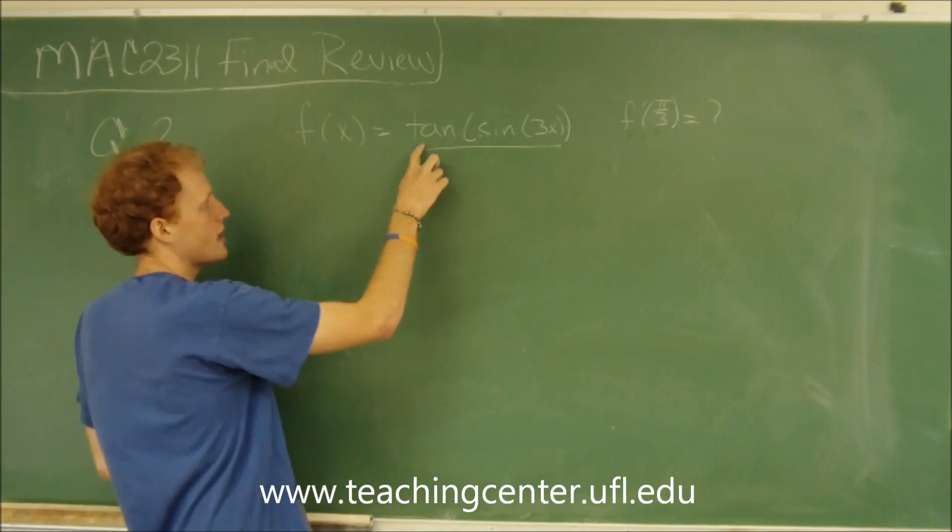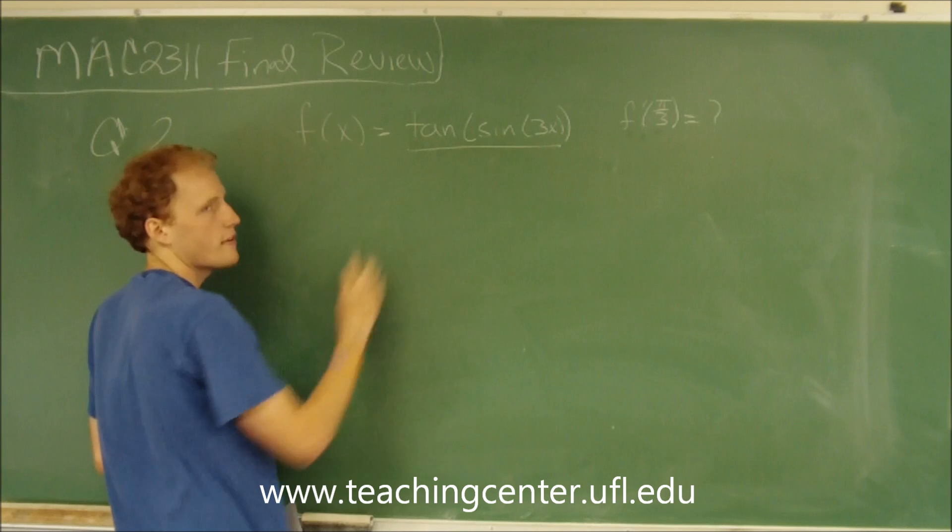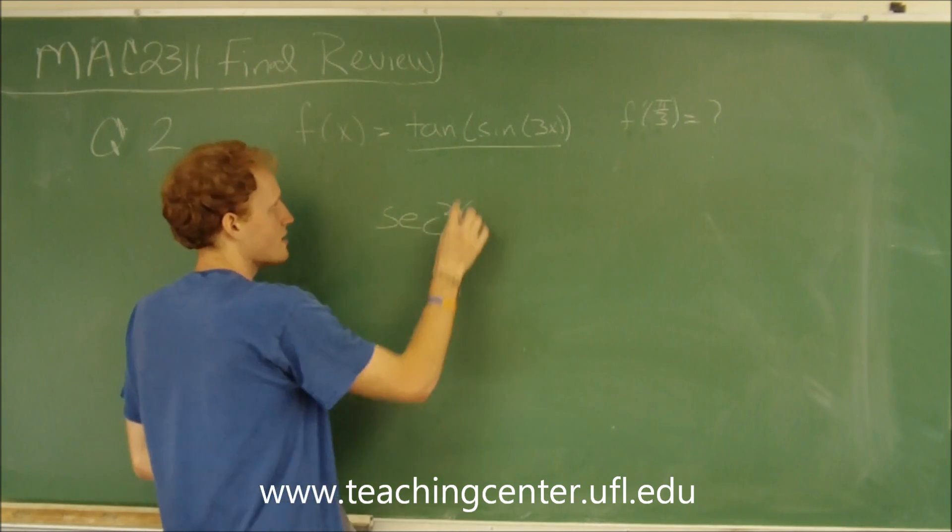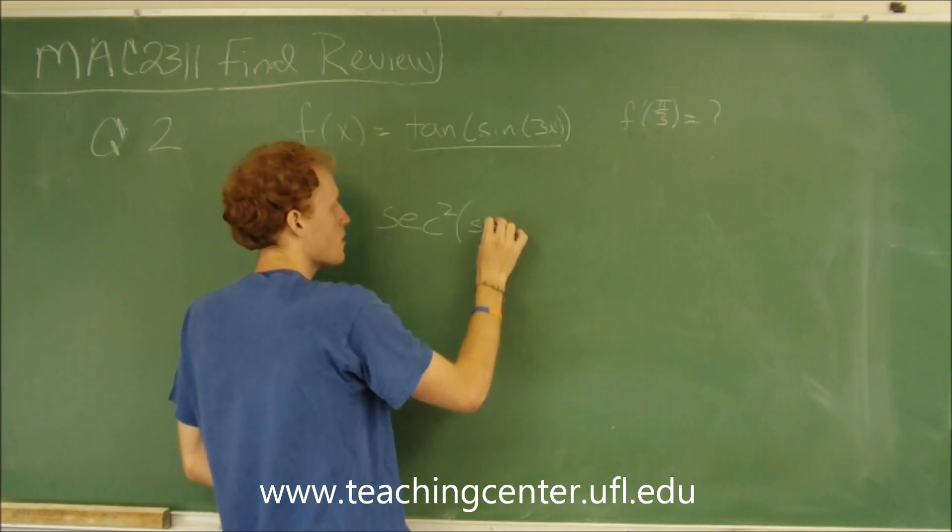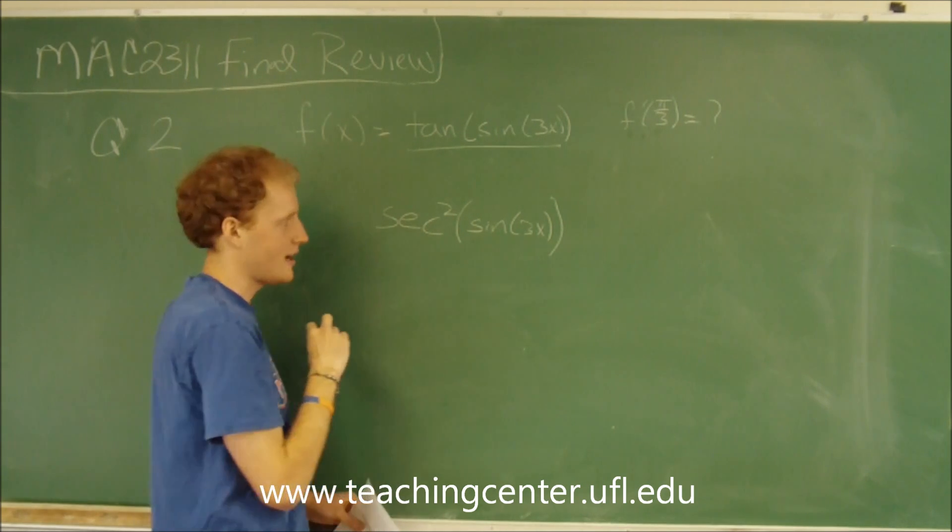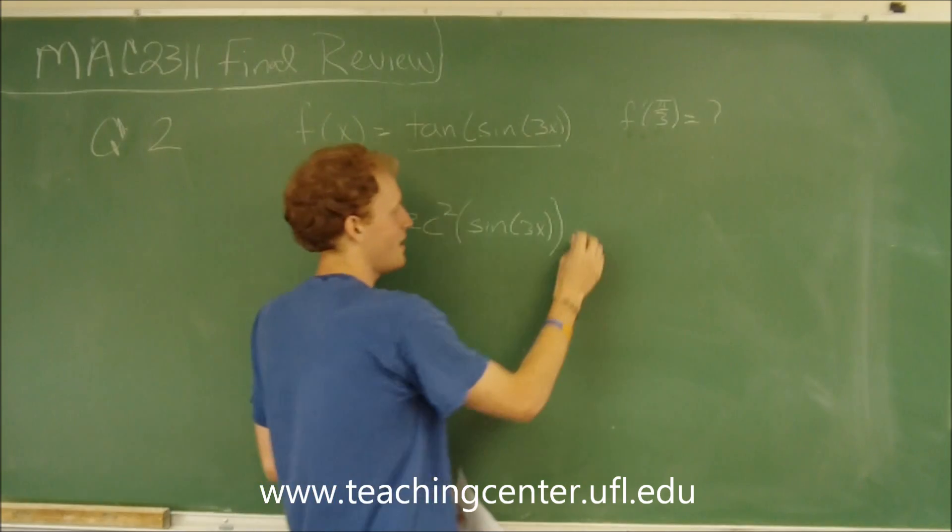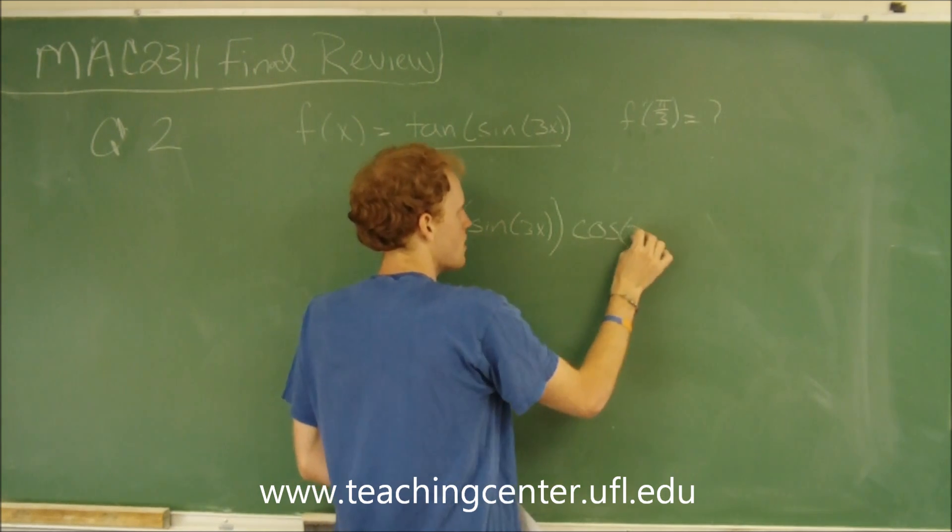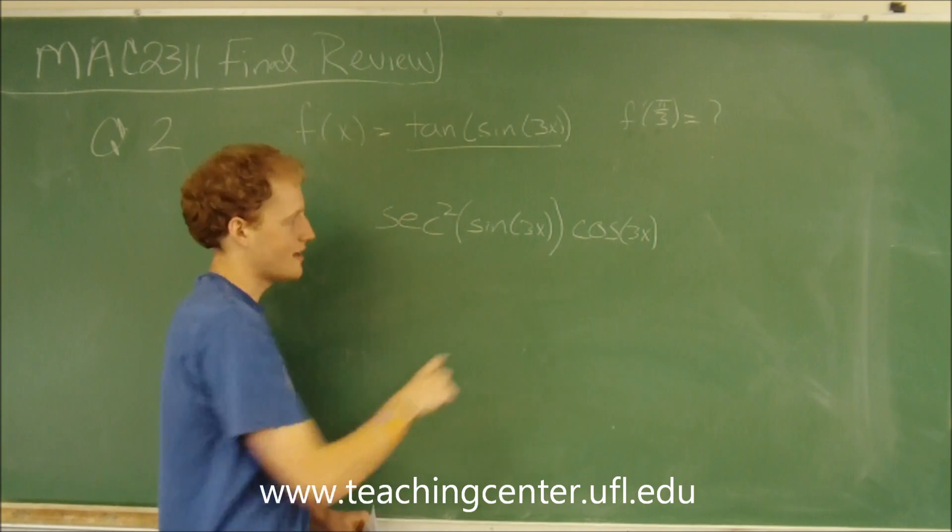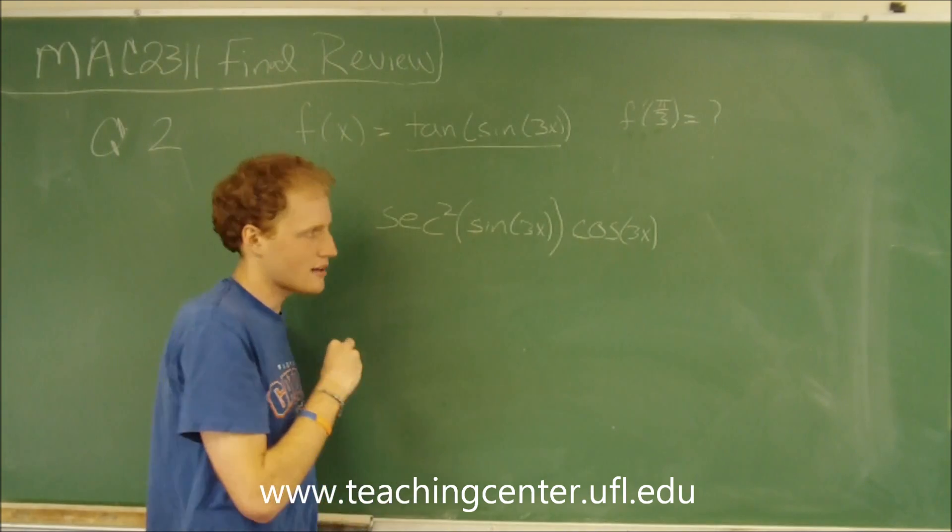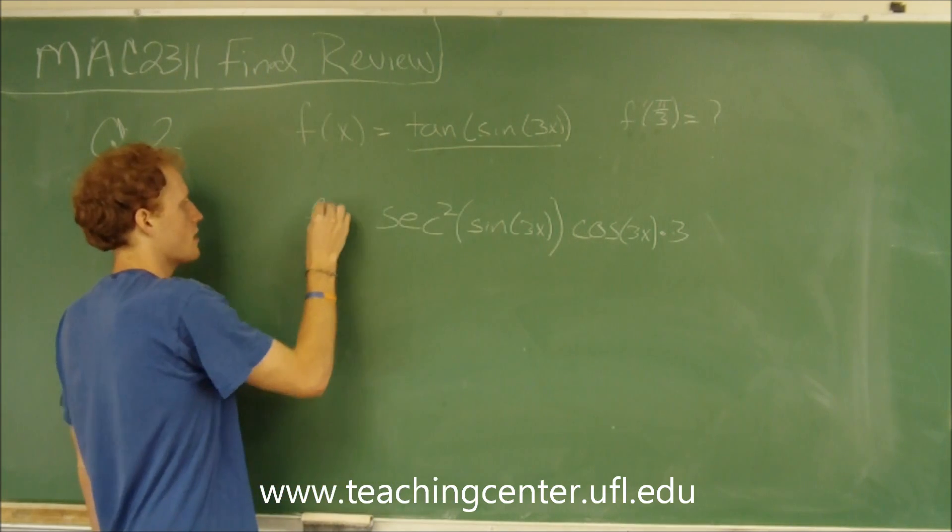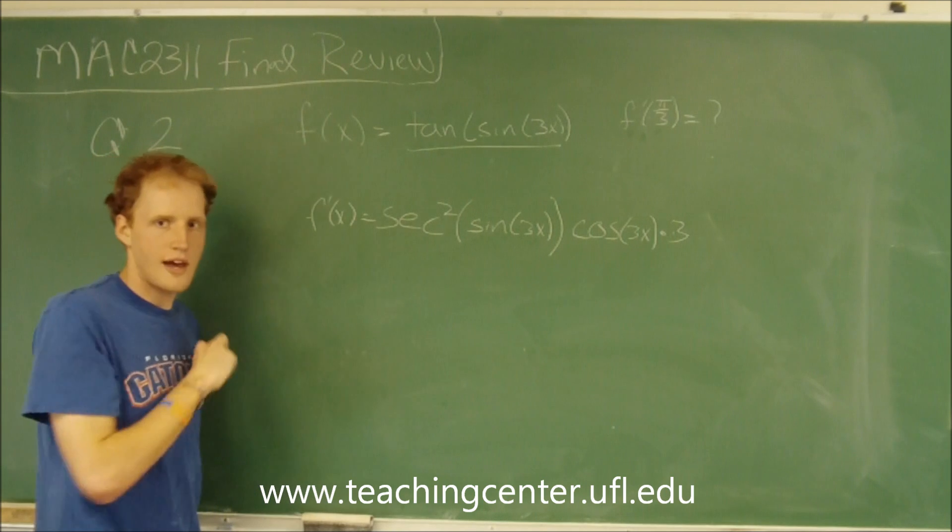So the chain rule is the derivative of the outside, so the derivative of the tangent is the secant squared, and it's with the original thing plugged in, then times the derivative of the inside, so the derivative of the sine is the cosine, and then now we go even further inside and take the derivative of 3x, so times 3. So this would be the derivative of f of x.